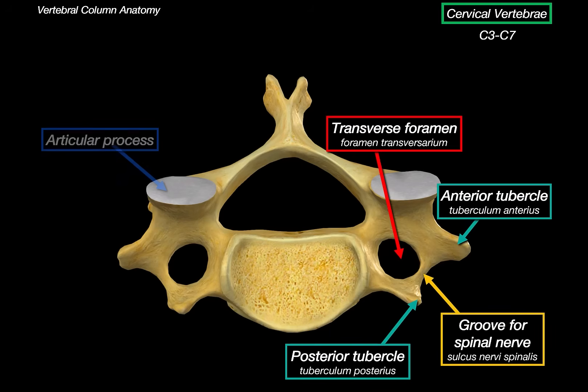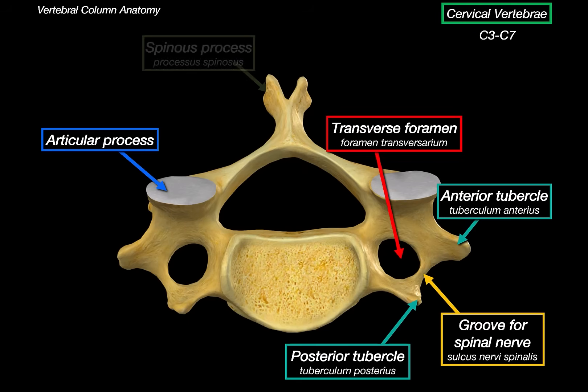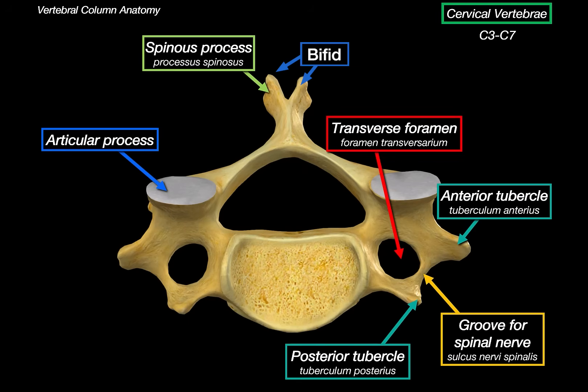Other things we can see on the transverse process are the anterior tubercles, which are remnants of the cervical ribs, a posterior tubercle, and the groove for the spinal nerve. We can also see the articular processes — the superior articular process points dorsocranally and the inferior articular process points ventrocaudally. The spinous process is distinct here in that it's bifid, with the exception of C1 and C7. It is shaped this way because it increases the surface area for muscles and ligaments to attach, especially since neck muscles are involved in fine movement and posture.